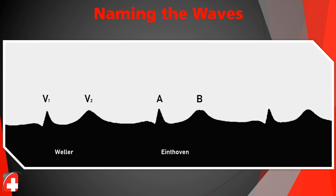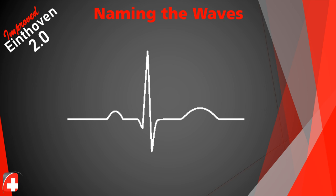Once the equipment was refined, they found there was also atrial depolarization. Dr. Waller called it an A wave — atrial, ventricular, logical. Unfortunately, Dr. Eindhoven had already used the letter A, so he had to start over and re-lettered the waves. He created A for the first one, B for the first downward deflection, C, and labeled the repolarization D because they hadn't seen the downward deflection at the end yet.